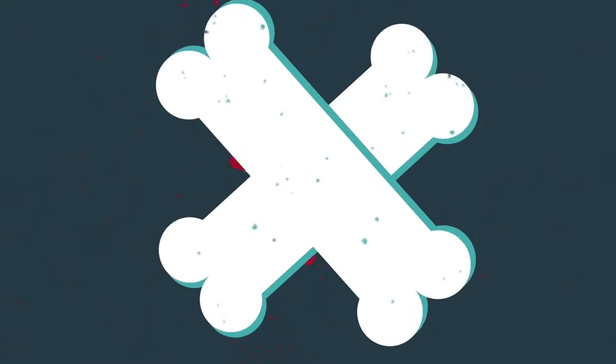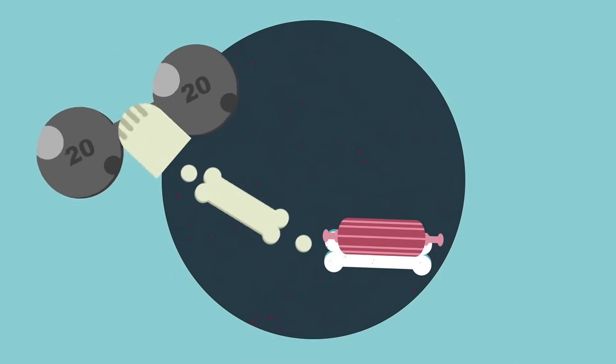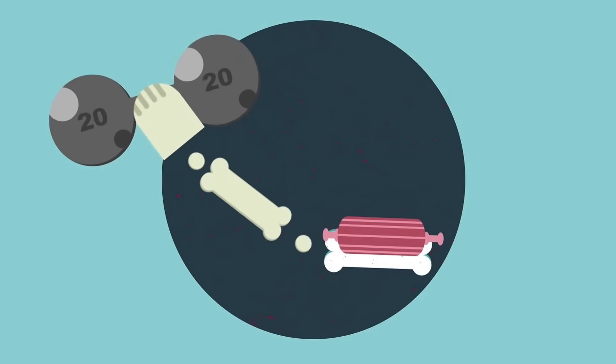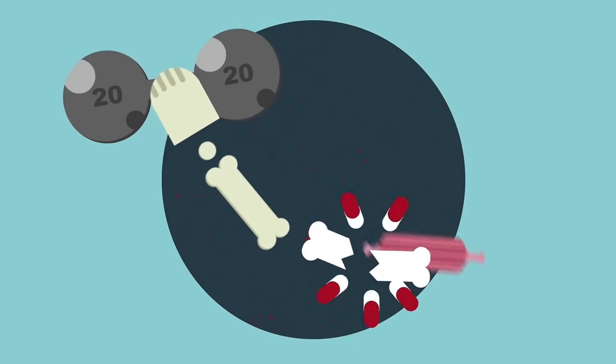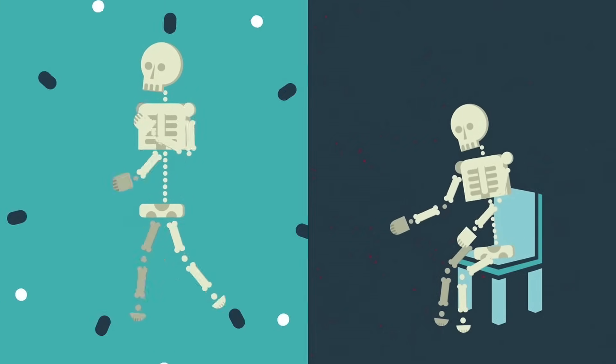If you took a bone built this way, attached muscles to it, and tried to use it to lift a heavy weight, the bone would probably snap under the strain. This doesn't usually happen to us because our cells are constantly reinforcing and building bone wherever they're used, a principle we refer to as Wolf's Law.